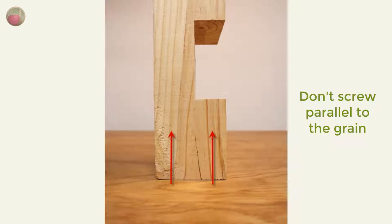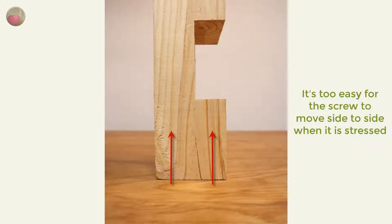When you insert a screw into the end grain of the leg, the thread of the screw is running directly parallel to the grain of the wood. That means it's a lot easier to knock out of the wood. And since these screws are holding casters, they're going to take a lot more side to side stress.